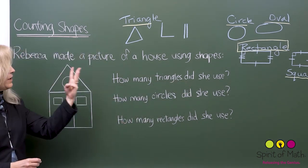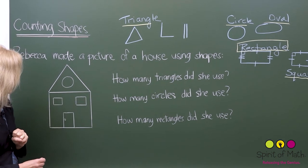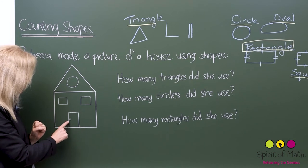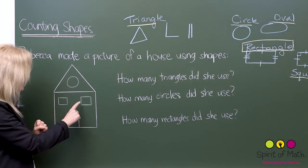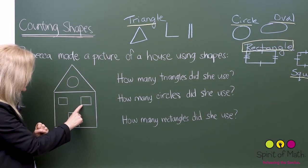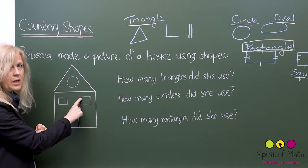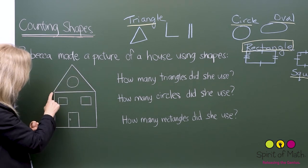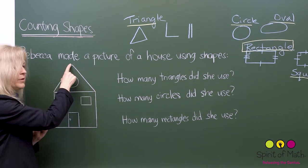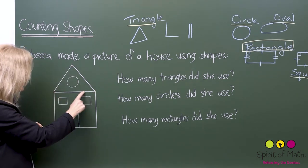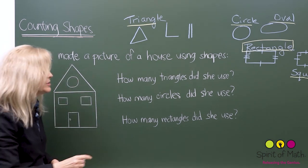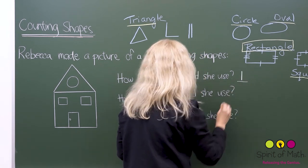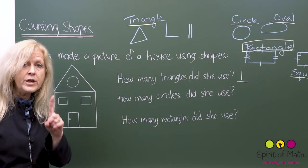Triangles have three sides. This shape is not a triangle — it has one, two, three, four sides. This one also has one, two, three, four sides, so it's not a triangle either. Do you see the triangle? Yes — the roof! Let's check: one, two, three sides. So there is one triangle. There are no other triangles, so we put the number one down there. She used one triangle.